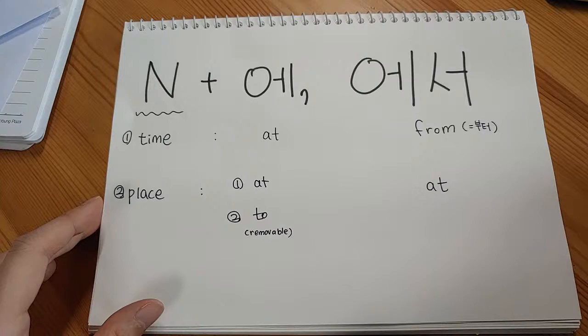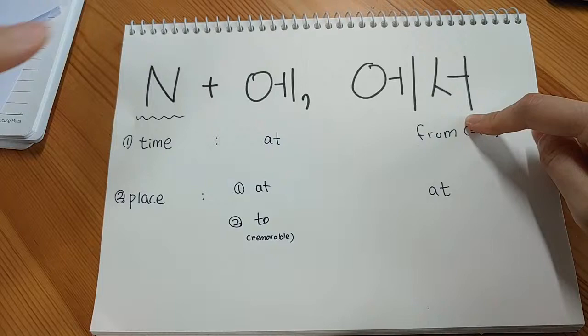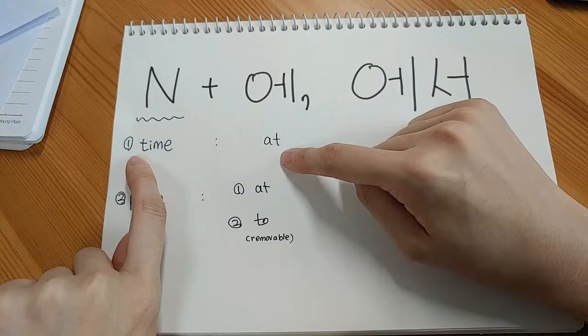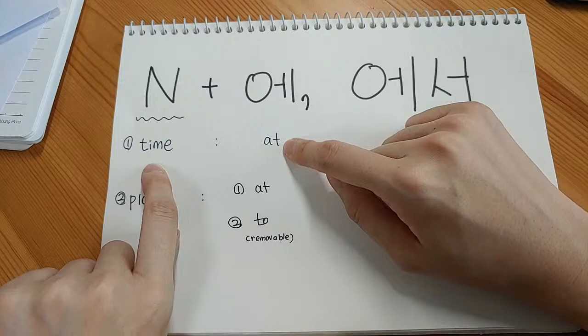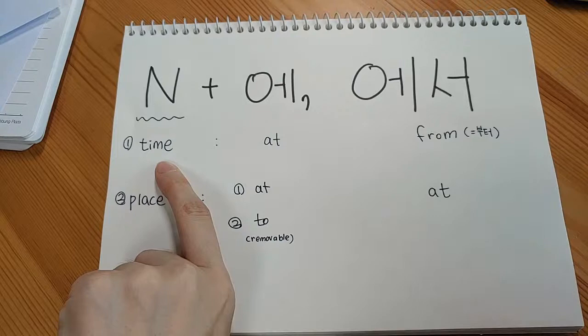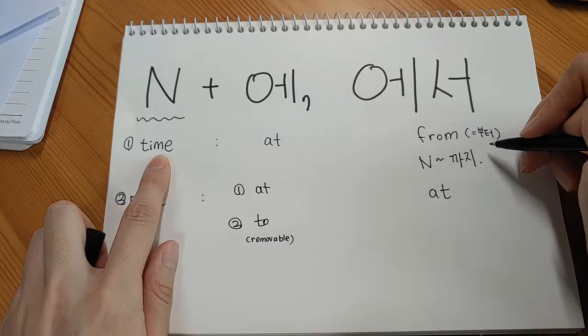First, we learned 에 and 에서, which are the time particle and place particle. When placed after a time noun, 에 means 'at' — so 한시에 means 'at one o'clock.' 에서 can also be placed after a time noun and means 'from,' and it's mostly followed by 까지, meaning 'till' or 'to.' So there's another time noun.